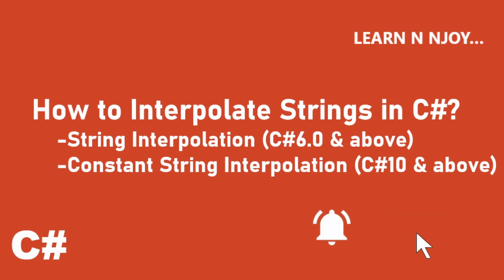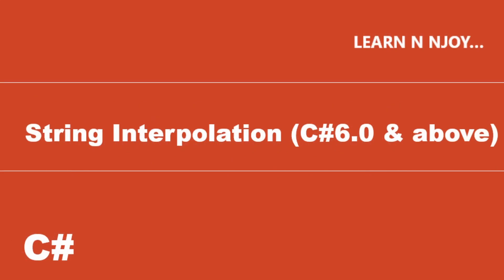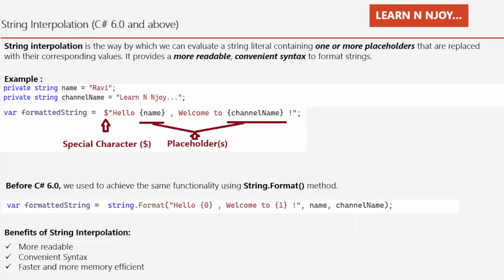Without any further delay, let's get started. String interpolation was introduced in C# 6.0 and is available in above versions. A string interpolation is the way by which we can evaluate a string literal containing one or more placeholders that are replaced with their corresponding values. It provides a more readable and convenient syntax to format a string. Whenever we want to format strings using interpolation, we put placeholders in between the string literals where we intend to replace the corresponding values at runtime.